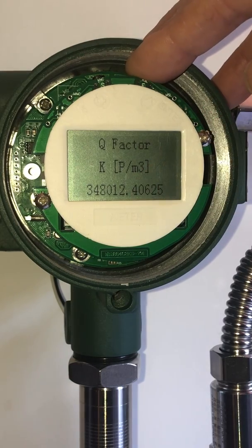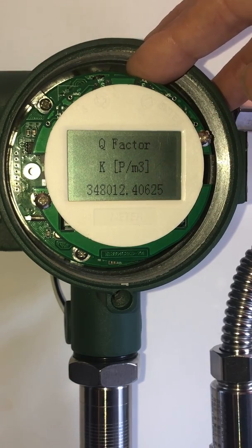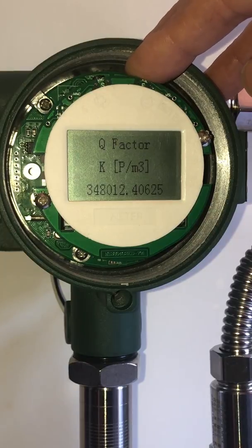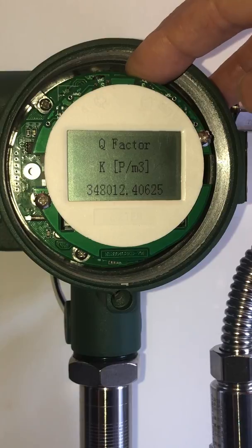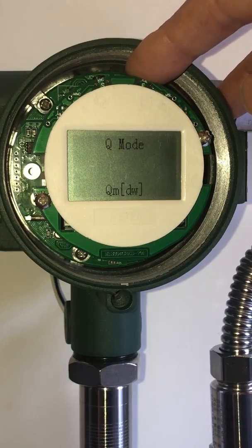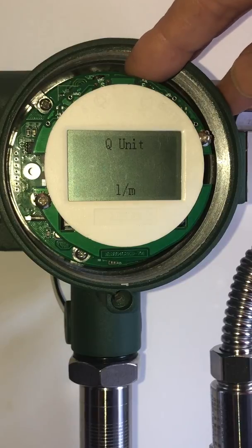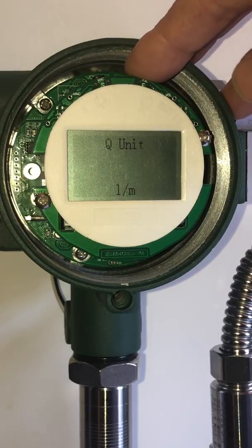This is the K factor of the meter, the Strouhal number that is done at the factory to correlate the von Karman vortex shedding frequency to the velocity. The Q mode is the mode in which the unit is either steam or volume.